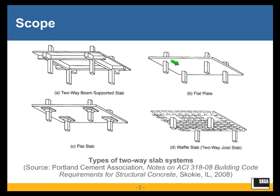When the column line beams disappear — done for reasons of formwork simplicity and shallowness of the slab system, which gives more headroom or allows more stories within the same height limit — we have a slab supported directly on columns, which we call a flat plate.